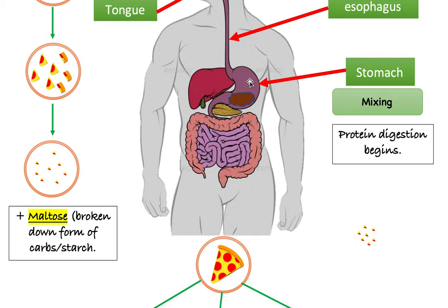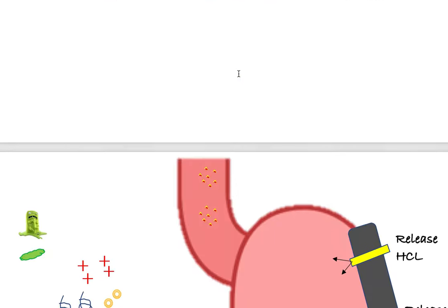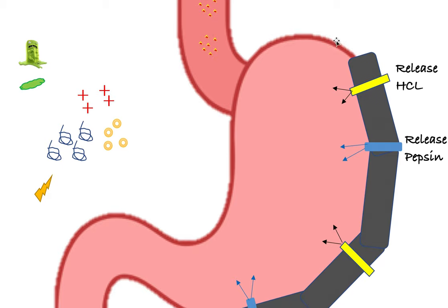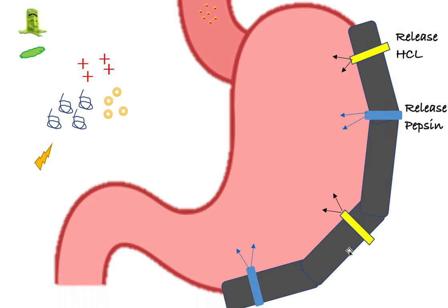Let's now talk about what happens inside the stomach in detail. The esophagus comes down and eventually reaches your stomach — this is your food. Your stomach has a membrane around it, the stomach wall. I made this diagram so it's clear to see. Just know that this stomach wall goes all the way around the stomach. And you can see this stomach wall has some things on it — these are glands, these are gastric glands. Gastric means stomach, so these are stomach glands, and what they do is release different things into the stomach.